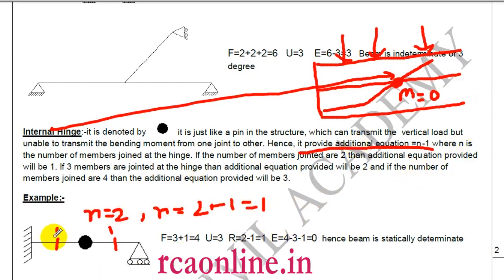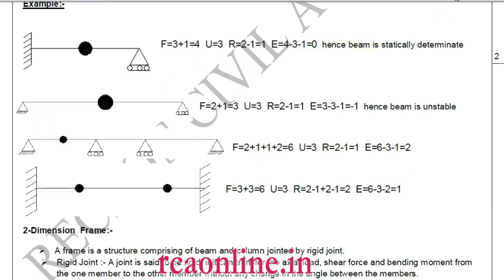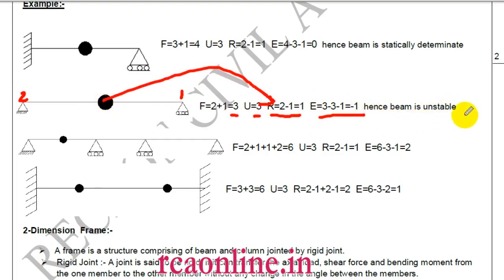For a beam with fixed support (f=3) plus roller (f=1), f equals 4, u equals 3. With an internal hinge joining two members, additional equation r equals 2 minus 1 equals 1. So E equals 4 minus 3 minus 1 equals 0 — the beam is statically determinate. Another problem: with f equals 3, u equals 3, r equals 1 from internal hinge, E equals minus 1 — the beam is unstable, a mechanism.